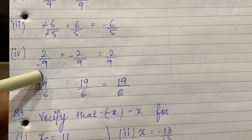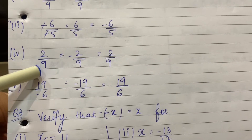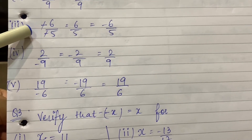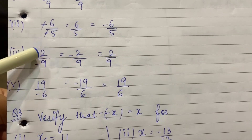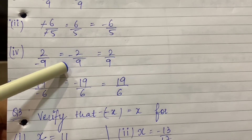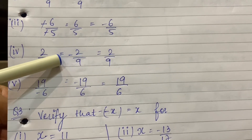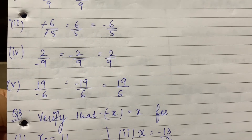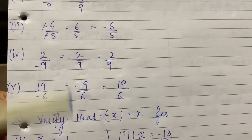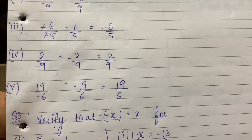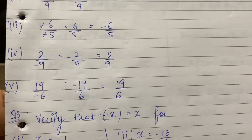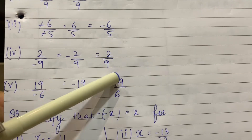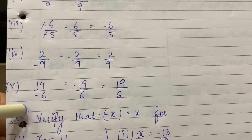Now 2 upon minus 9. Whenever the minus sign is in the denominator, it means the minus sign switches to the numerator. So it becomes minus 2 upon 9. Then its additive inverse will be 2 upon 9. The minus sign never stays in the denominator — if it is there, it switches up to the numerator. When the sign is in the numerator and we take the additive inverse, it becomes positive.